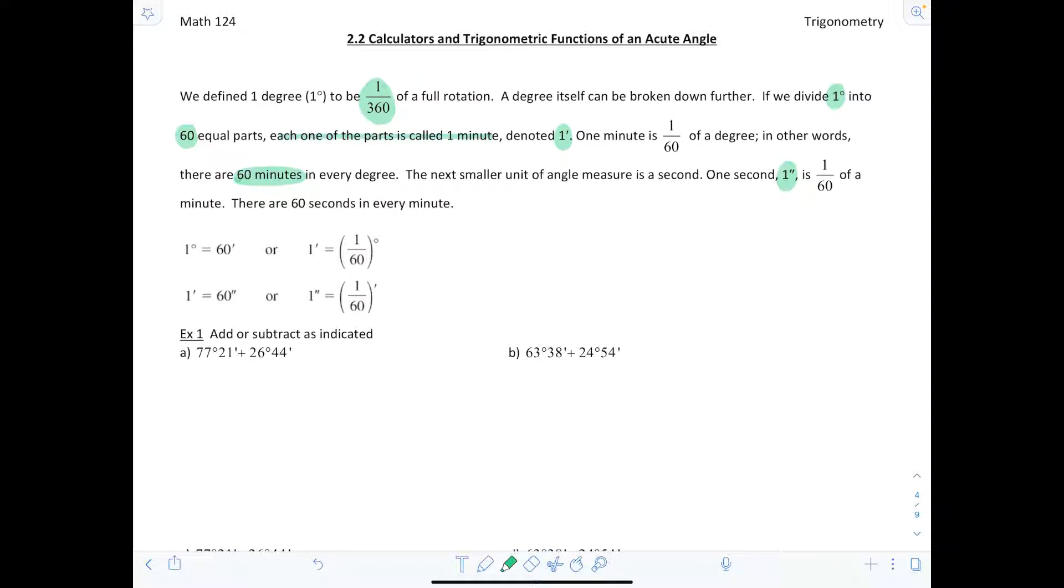To reiterate, one degree contains 60 minutes, meaning 1 minute is 1/60th of a degree, and also 1 minute is 60 seconds, which means 1 second is 1/60th of a minute. Let's look at some examples and get used to working with degrees and minutes simultaneously.